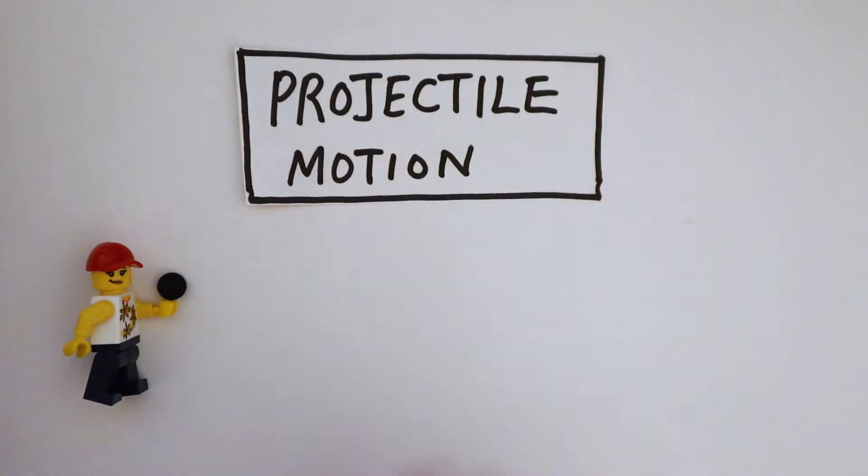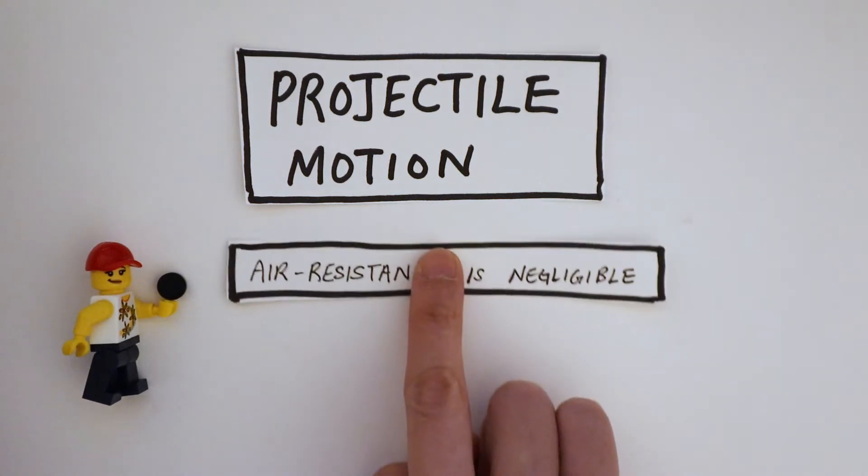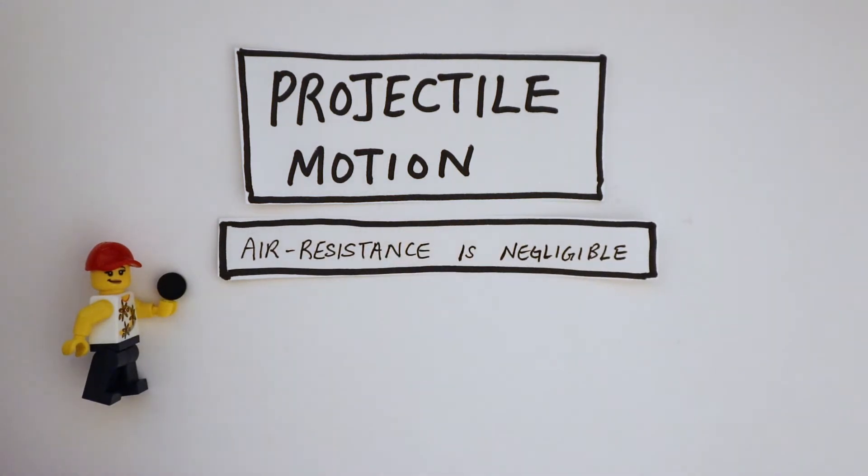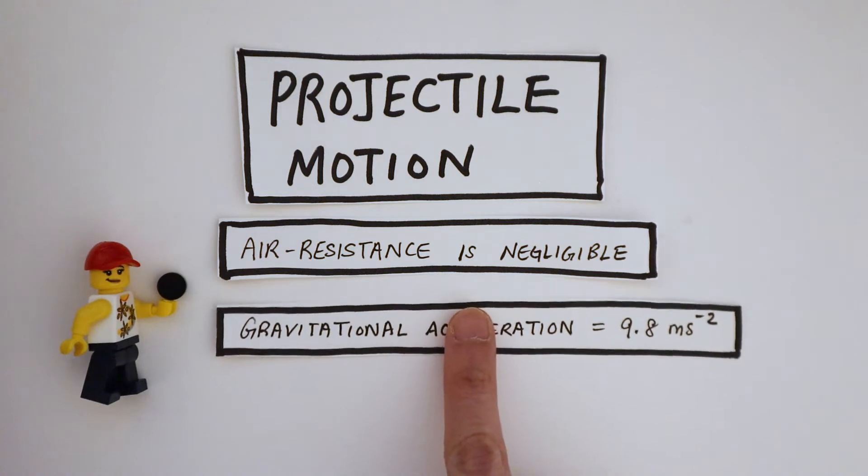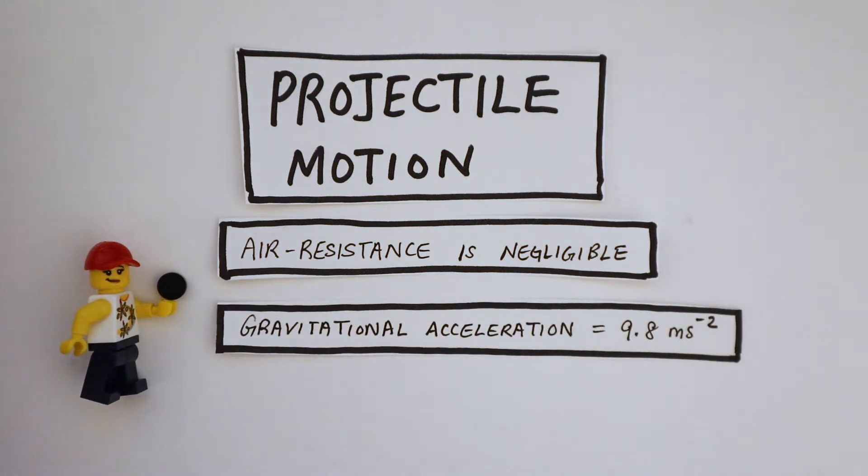When looking at projectile motions, we need to make two assumptions. Air resistance is negligible, and gravitational acceleration is constant. We can approximate it to 9.8 meters per second squared.